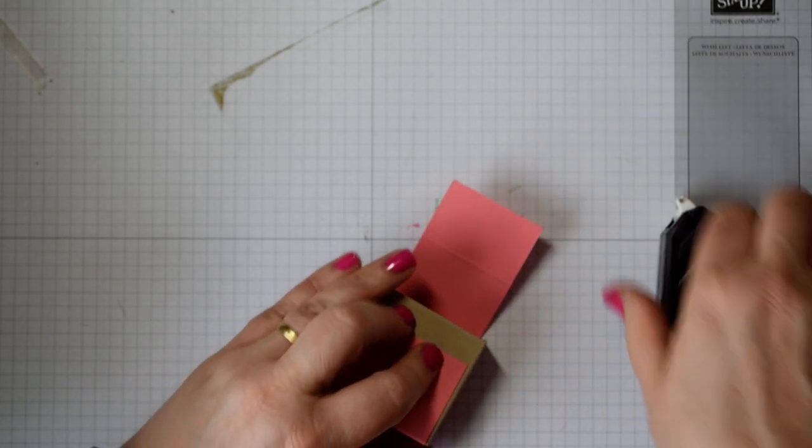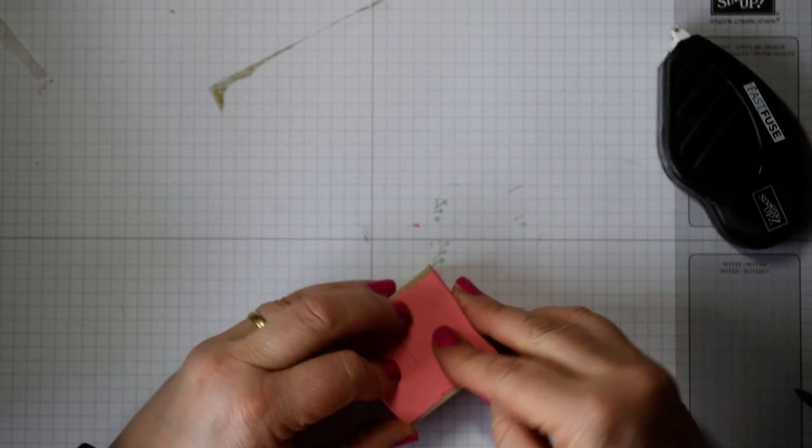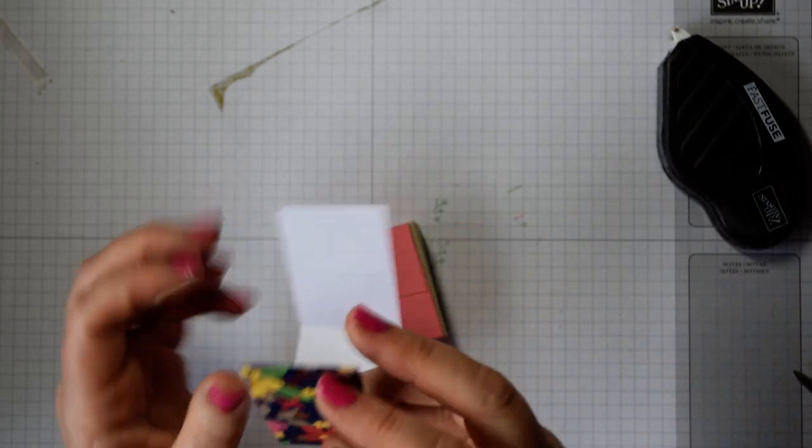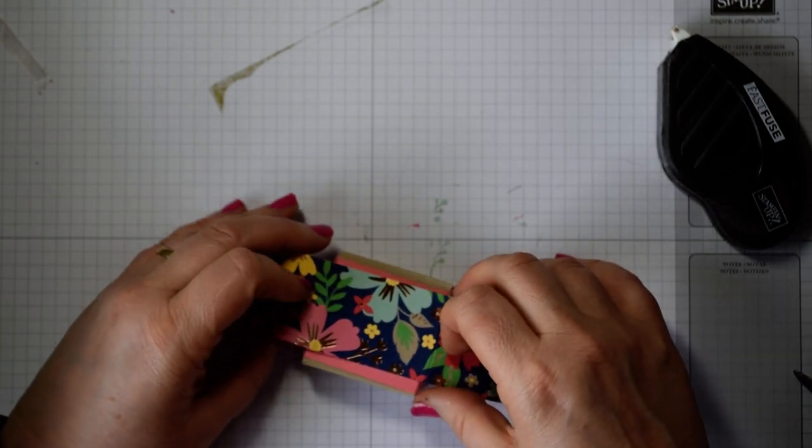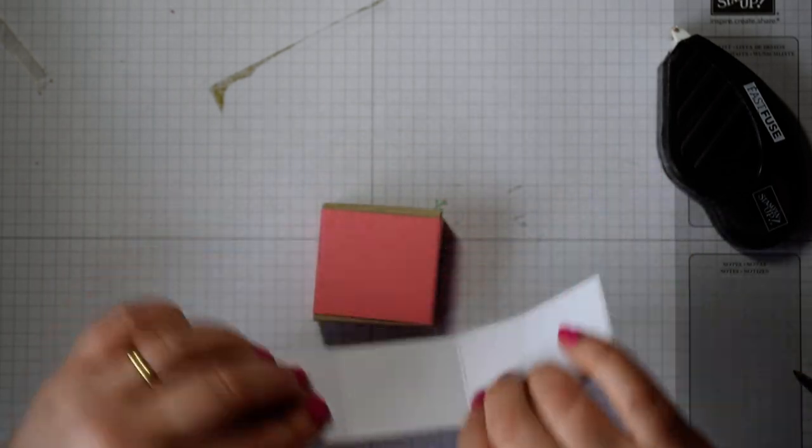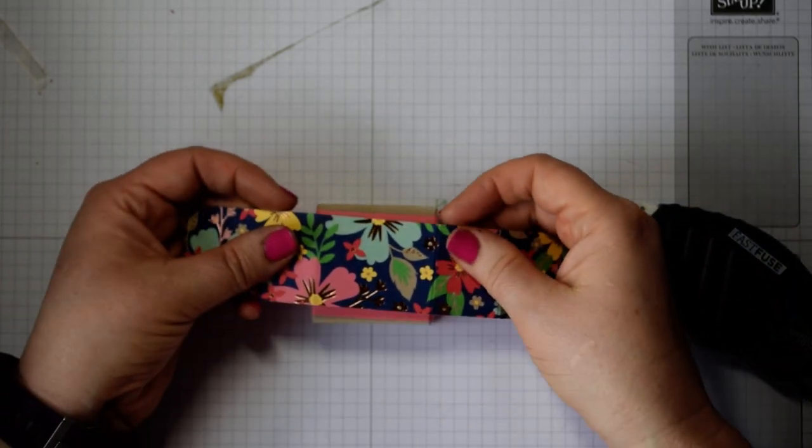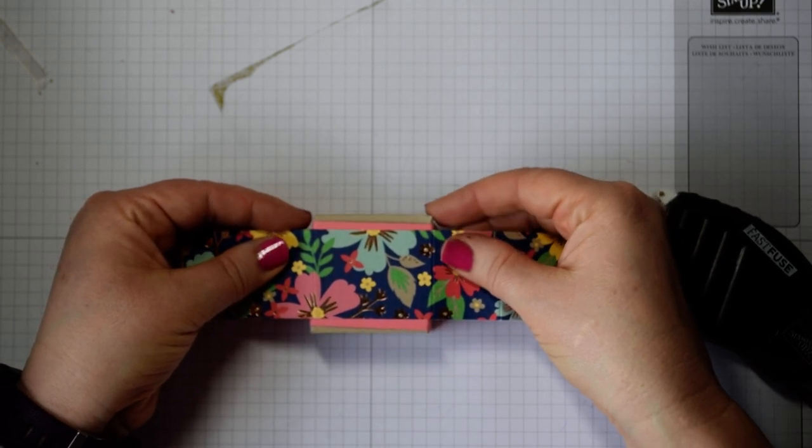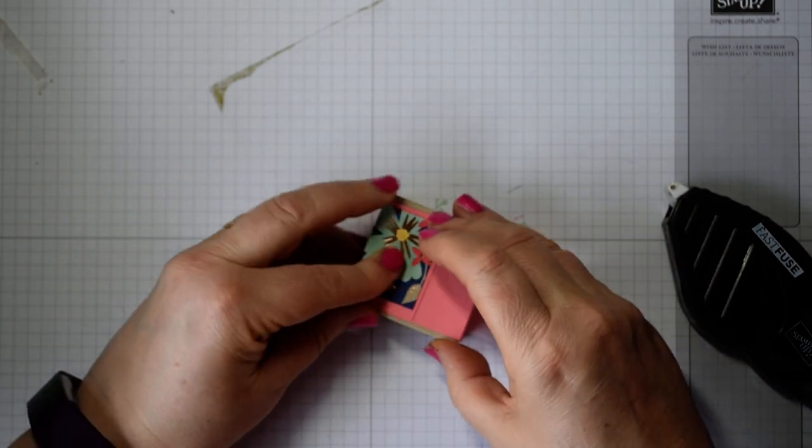So once you've lined it up, just again a bit of fuse. I tend to use fuse because you want a strong bond on those. And then I've done the DSP wrap separately. I did try it by scoring both at the same time but found it didn't quite work. And then what I do is I literally just line it up in the middle there with a little bit of glue on the inside. And then you can bring it around.